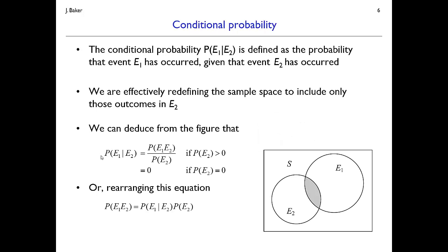We can also compute conditional probabilities. The probability of E1 given E2 — reading the vertical bar as 'given' — is the probability of event E1 given that event E2 has already occurred. We assume E2 has occurred and ask: given that information, what is the probability of E1? We essentially set the sample space to be only the outcomes in E2.